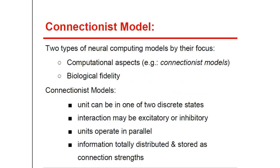Now we will introduce the connectionist model. But firstly, there are two types of neural computing models: models that emphasize computational aspects — here a particular focus are the connectionist models — and models emphasizing biological fidelity. Other names for the first category, those that emphasize computational aspects, are artificial neural net models, parallel distributed processing models, or neuromorphic models.